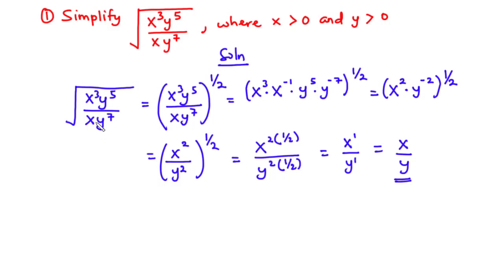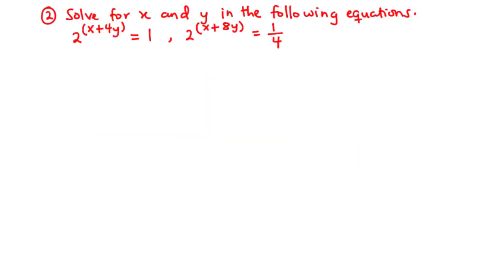Now let's solve our next question. This is NOVDECK 2011 question 2: solve for x and y in the following equations — 2 exponent x plus 4y equals 1, and 2 exponent x plus 8y equals 1 over 4.